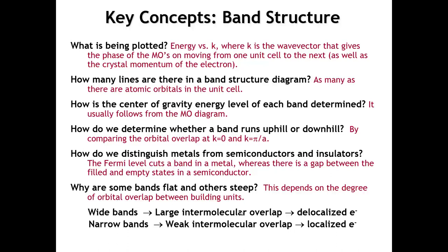Narrow bands, like the flat dz² band we saw in the last example, occur when an orbital has minimal overlap with atomic orbitals in neighboring unit cells, corresponding to something that would be quite localized. Remember these ideas as we move on to three-dimensional band structure.